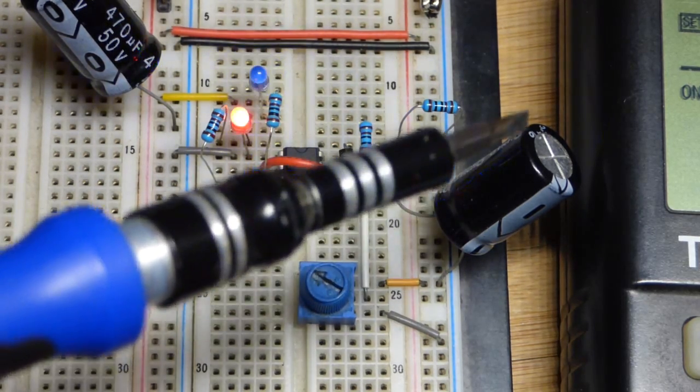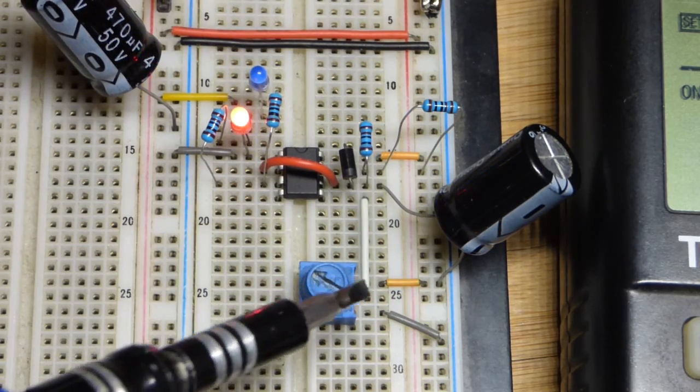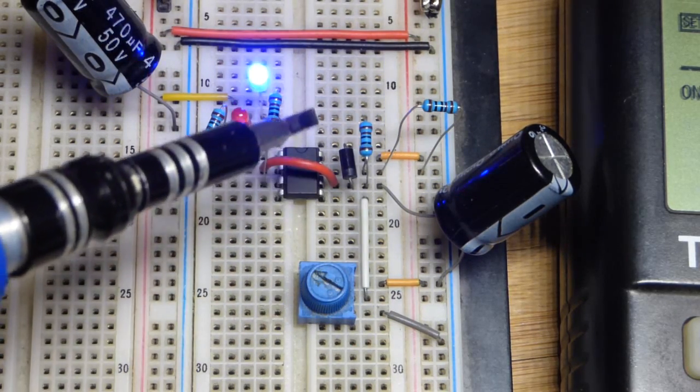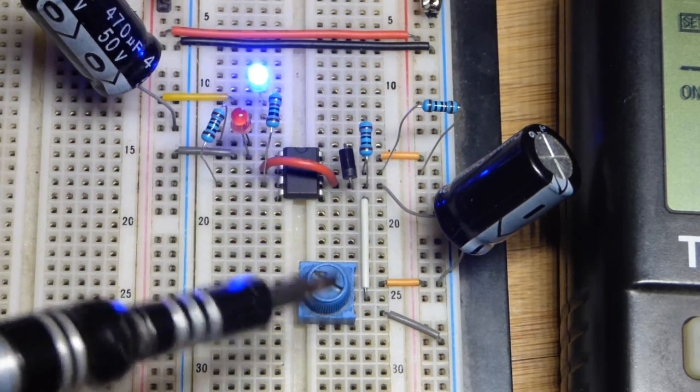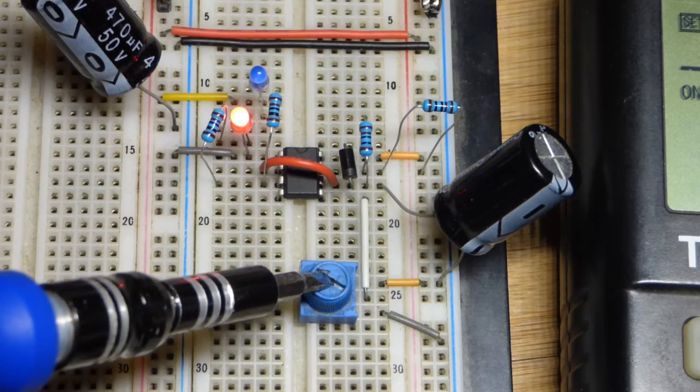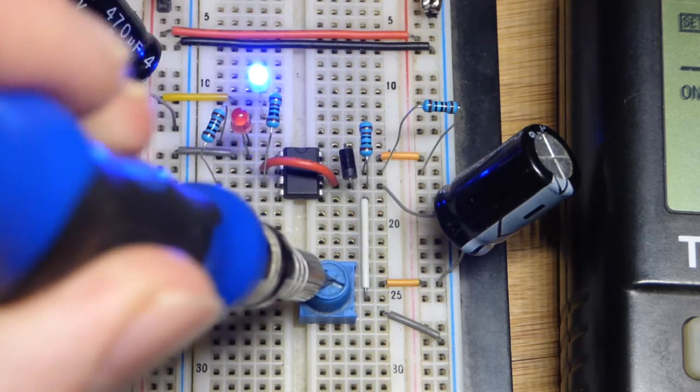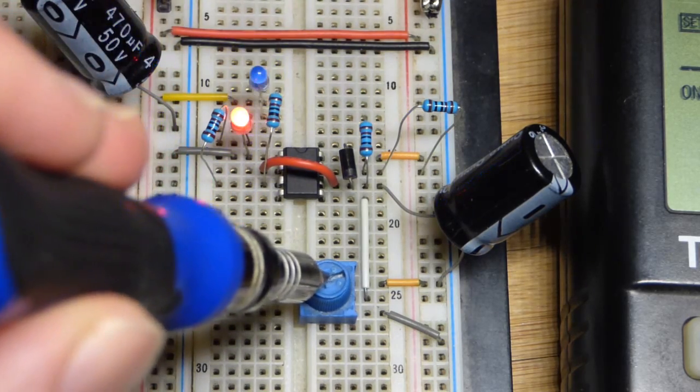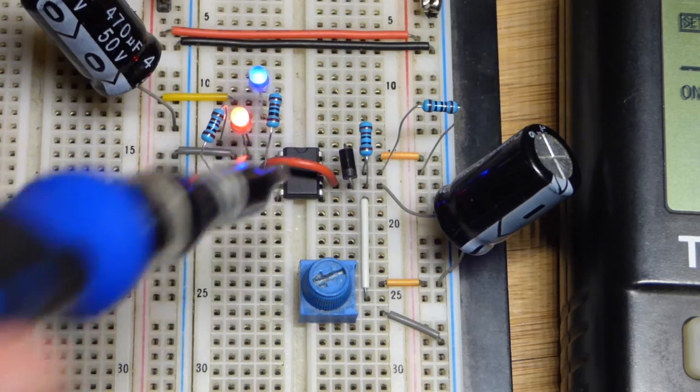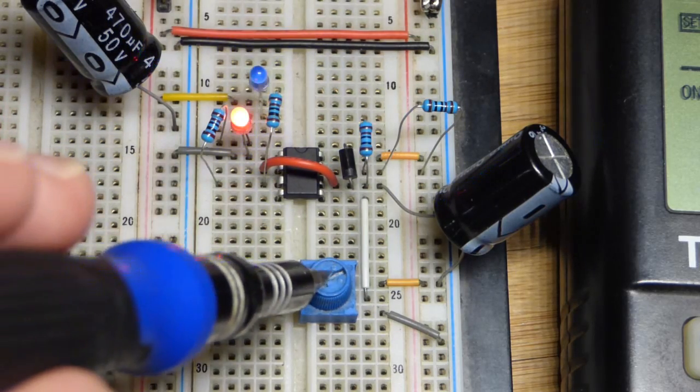That will control where the capacitor charges and discharges to. But we are basically tapping in to where that two-thirds supply voltage will be. So unless we set this to two-thirds of the supply voltage, whatever voltage we set here will ultimately change where that two-thirds voltage was. So it's not two-thirds anymore.